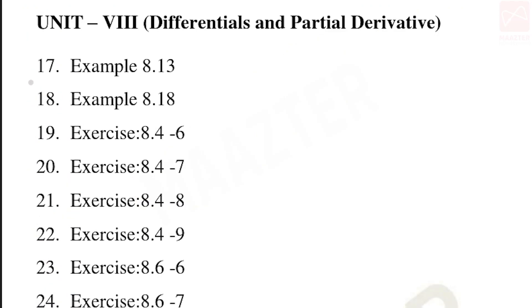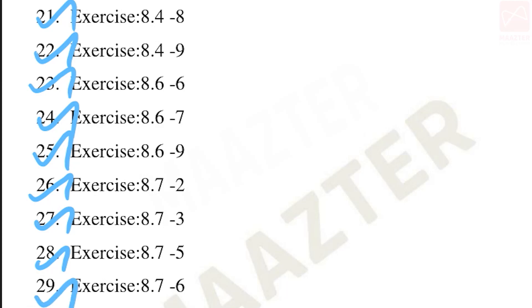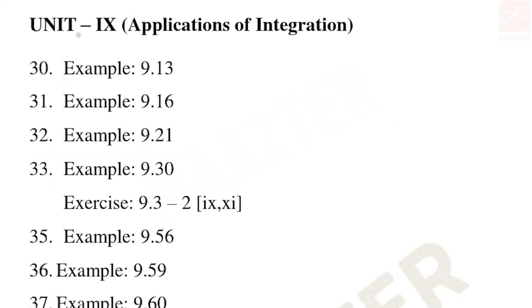Unit 8 five-mark questions: examples 8.13 and 8.18. Exercise 8.4 — sixth, seventh, eighth, and ninth sums. Exercise 8.6 — sixth, seventh, and ninth sums. Exercise 8.7 — second, third, fifth, and sixth sums. These complete the five-mark questions for Unit 8.